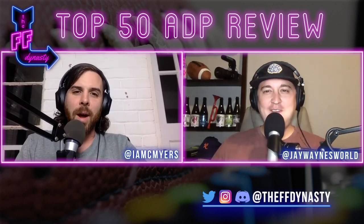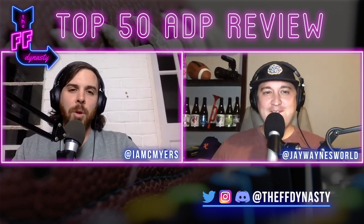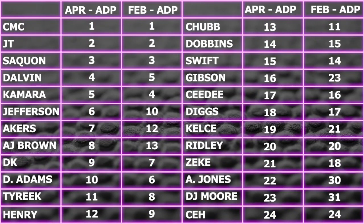The top five pretty much remain the same — Dalvin and Kamara swap spots. We've got Christian McCaffrey, Jonathan Taylor, Saquon Barkley, Dalvin Cook, and Alvin Kamara in the top five. Gotta get those running backs. At six is where the change starts — Justin Jefferson is now the number one dynasty wide receiver, moving up from 10 to 6. Cam Akers also makes a big jump from 12 to 7.